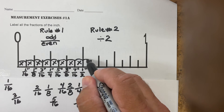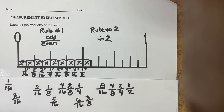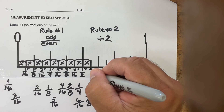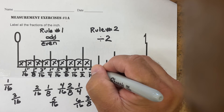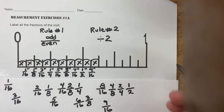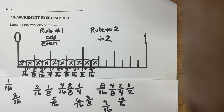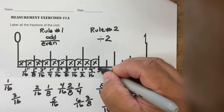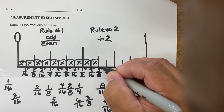The next one brings me to nine-sixteenths of an inch. Nine over 16 is already odd over even, so my answer is nine-sixteenths of an inch. The next one brings me to ten-sixteenths. Ten over 16 is not odd over even, so I apply rule two: two goes into ten five times, two goes into 16 eight times. Five over eight is odd over even, so the answer is five-eighths of an inch.